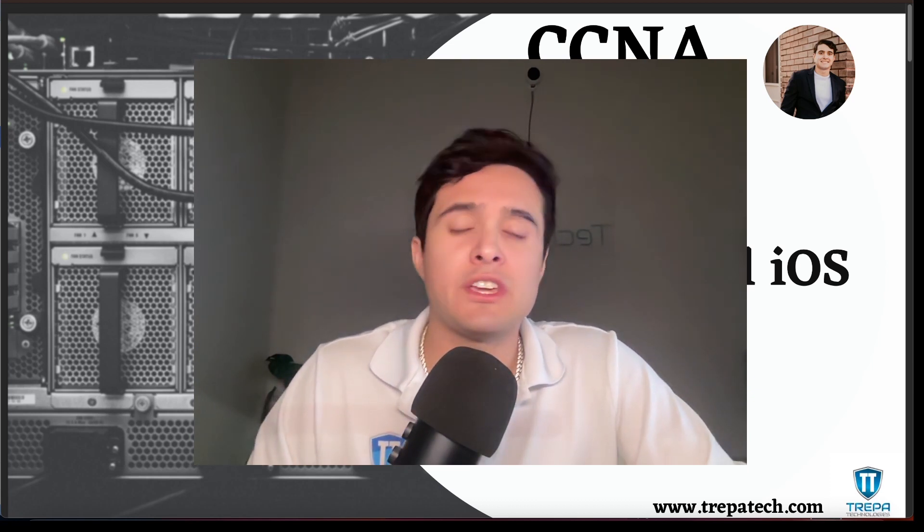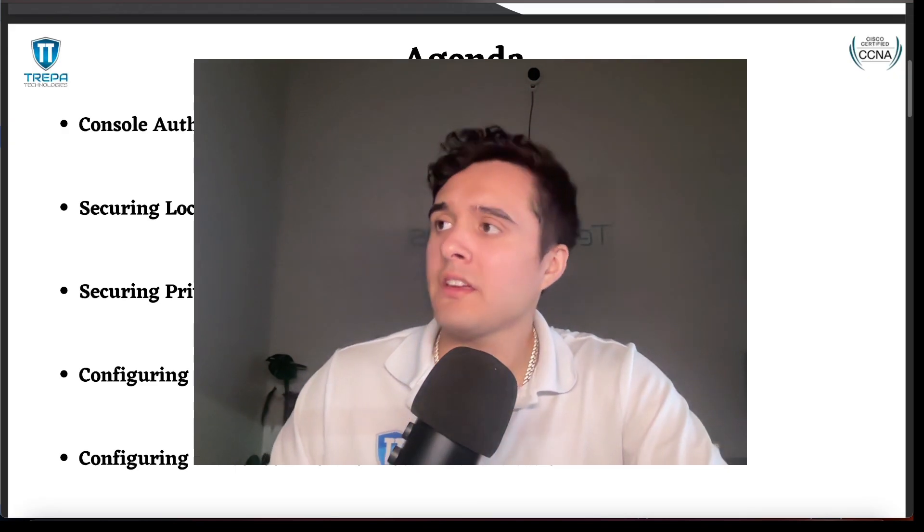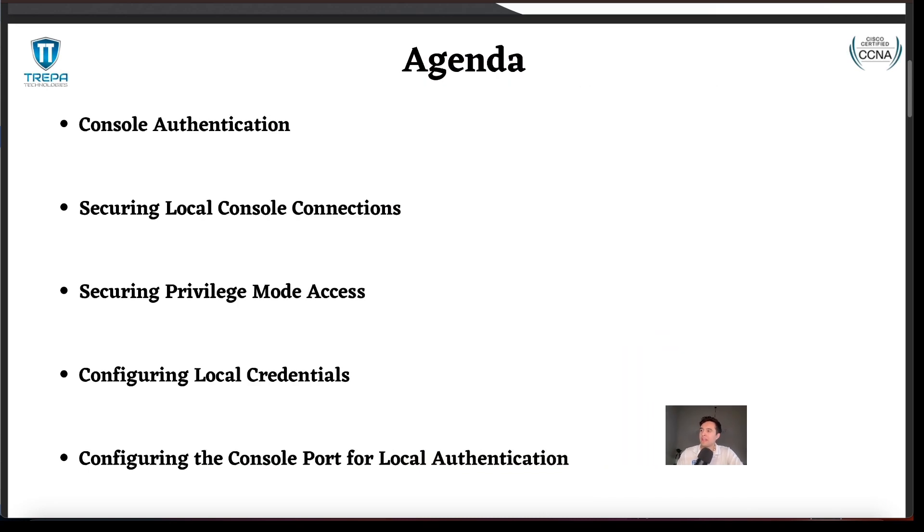For some of you watching this video, you know that we can also protect access to our IOS using a triple-A server, but then it wouldn't be local. That triple-A server that runs TACACS does authentication, authorization, and accounting, and sits away from the network infrastructure at a central point — it could be in the cloud somewhere. So we're just going to go over how to do this locally on your switch or router.